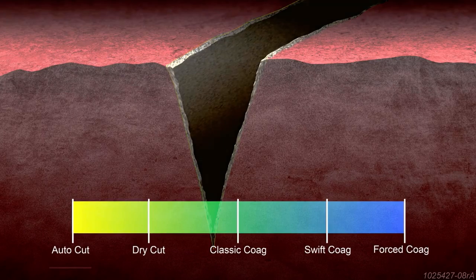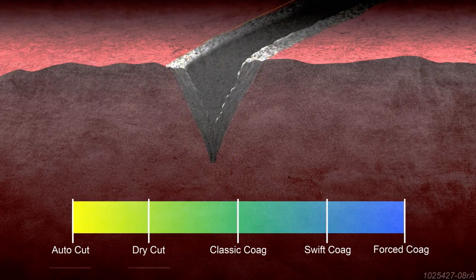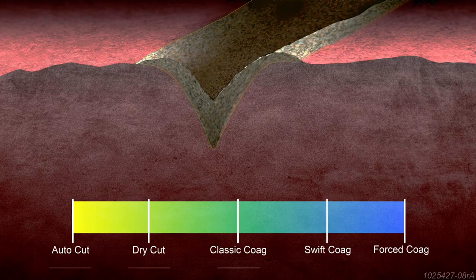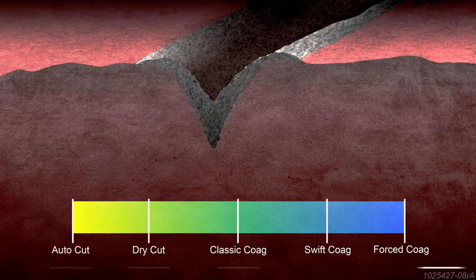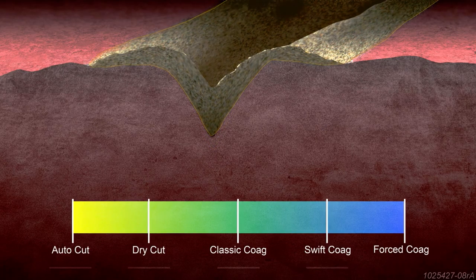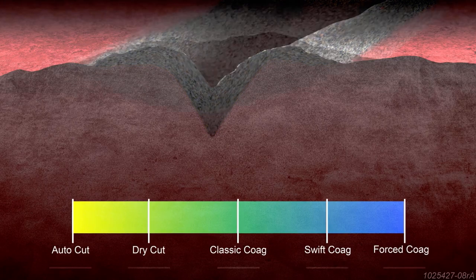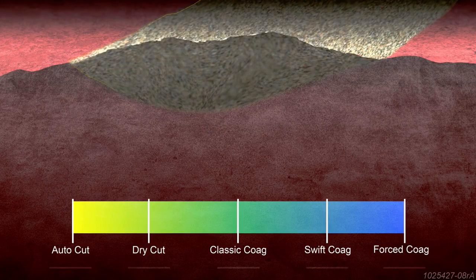Autocut is a pure cut mode. Dry cut is a blend offering mostly cut and some coagulation properties. Classic coag is a blend mode with some cut and some coag. Swift coag is also a blend but with mostly coagulation and some cutting. Forced coag is a primarily coagulation mode.